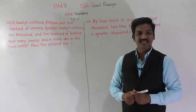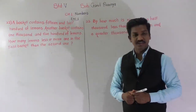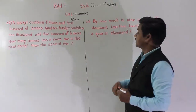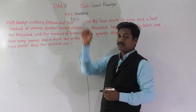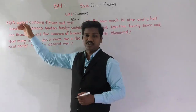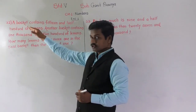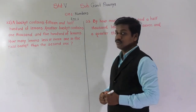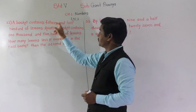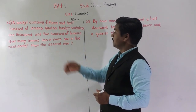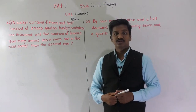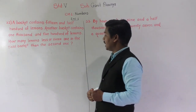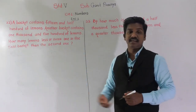Hello everyone, welcome to today's video lecture of Ganit Pravinia. In today's lecture we are going to solve the next problems in Exercise 1 of the chapter. The next question is question number 22: a basket contains 15 and a half hundred of lemons; another basket contains 1500 lemons. How many lemons less or more are in the first basket than the second one?